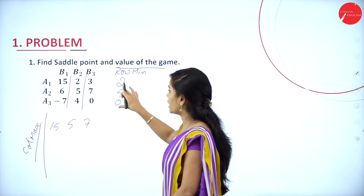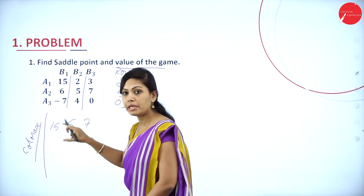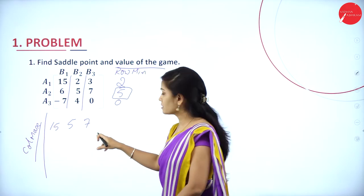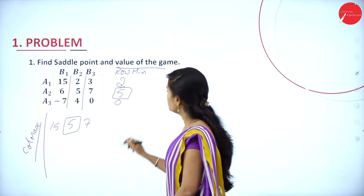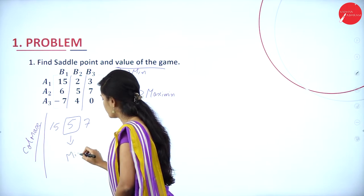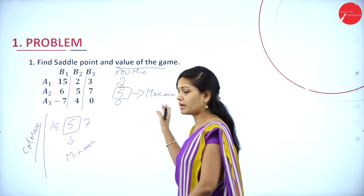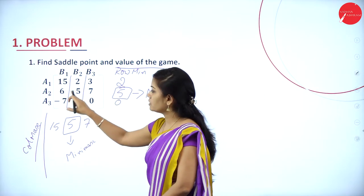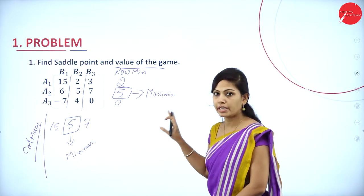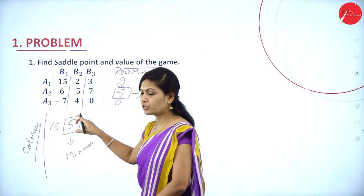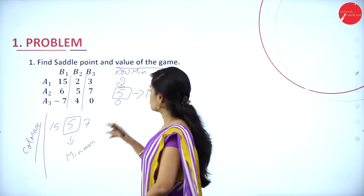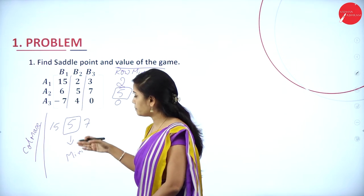Now find the maximin value and the minimax value. Among the row minima values 2, 5, and 0, the highest value is 5 — that is the maximin value. Among the column maxima values, the least value is 5 — that is the minimax value. Player A maximizes the minimum guaranteed gain, and 5 comes under column B2. Player B is minimizing the maximum loss.